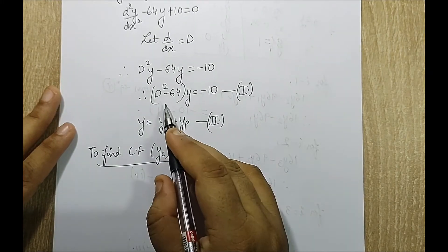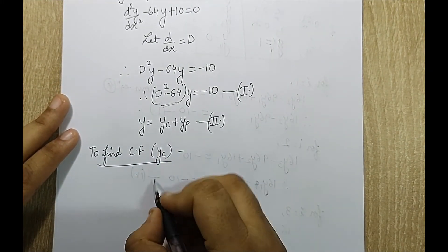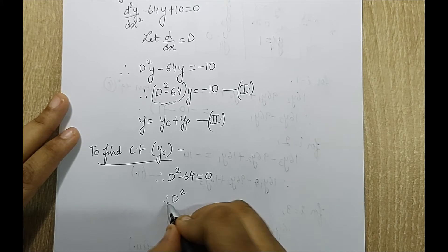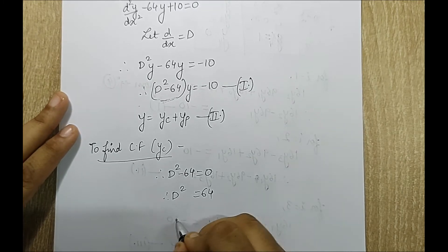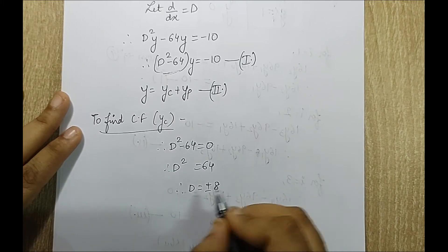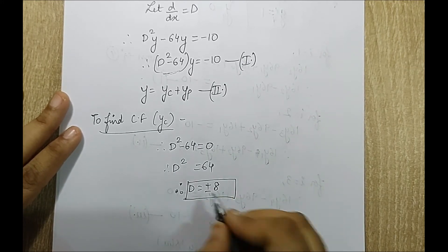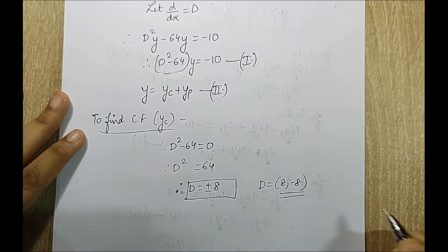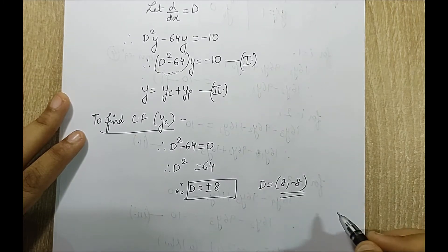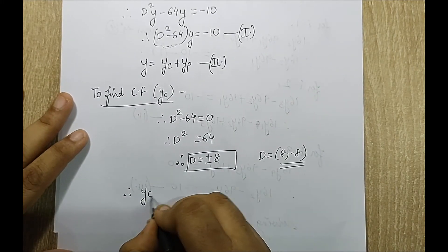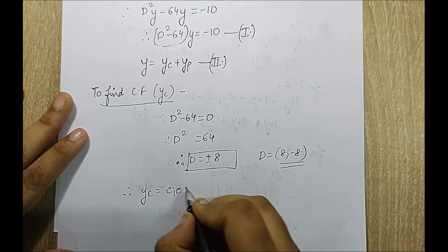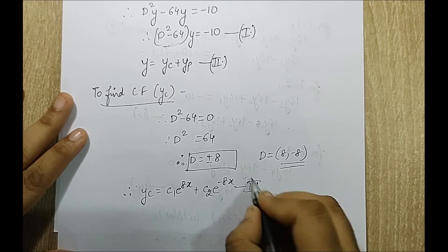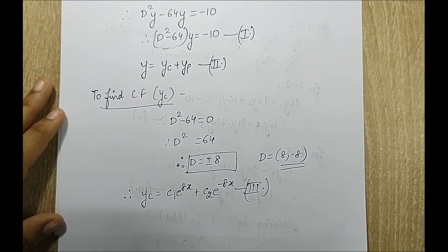To find the complementary function yc, I equate the characteristic equation to zero: D² minus 64 equals 0, so D² equals 64, giving D equals plus or minus 8. These two roots are real and unequal, so yc equals c1·e^(8x) plus c2·e^(−8x). This is equation 3.